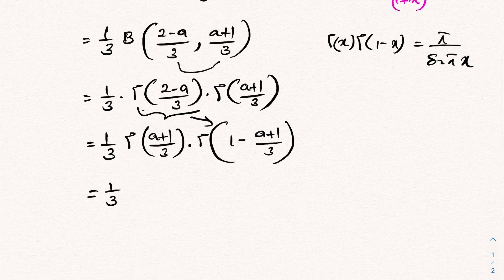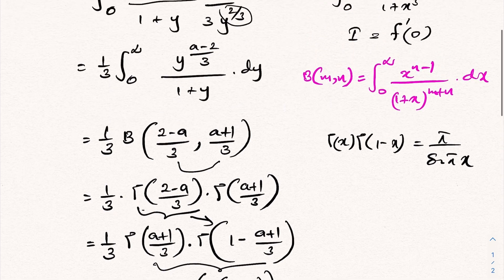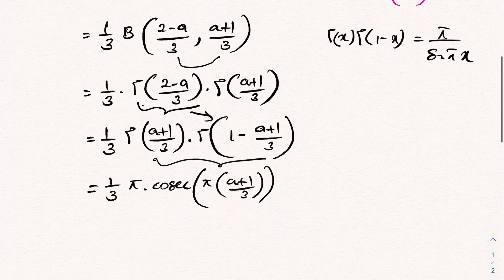So f(a) equals 1 over 3 times pi over sine of pi times (a plus 1)/3, which is pi over 3 times cosecant of pi times (a plus 1)/3.